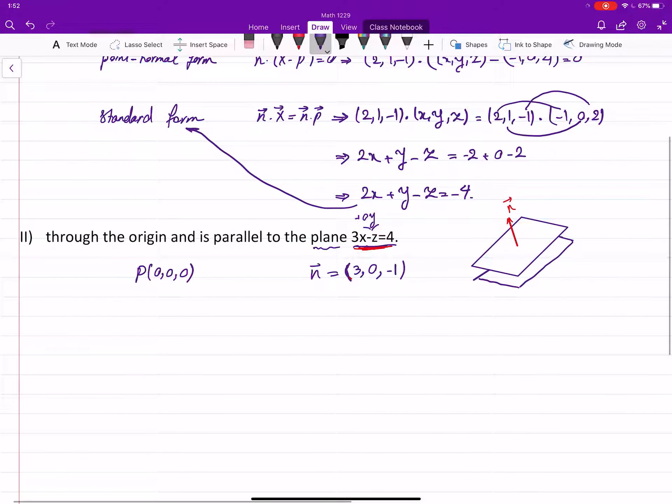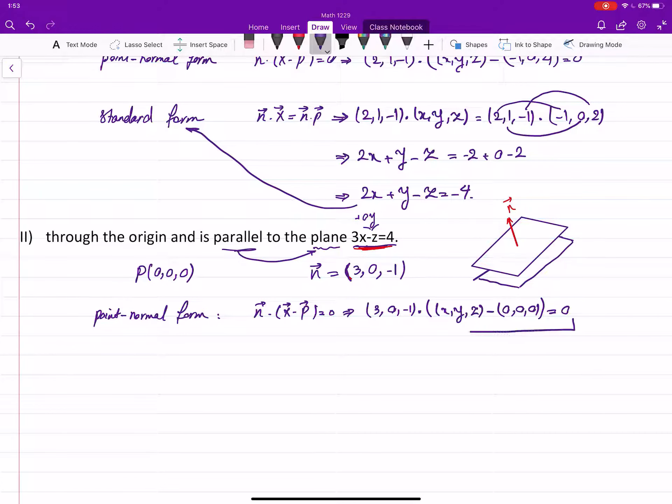And since our plane is parallel to that plane, we can use that as a normal vector for our plane. Then we have point-normal form, which is n·(x-p) = 0. Here is (3, 0, -1)·[(x, y, z) - (0, 0, 0)] = 0. This is the equation in the point-normal form.